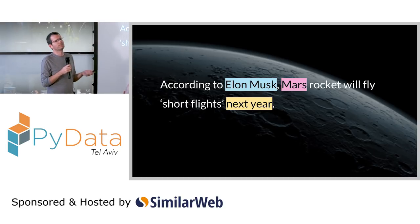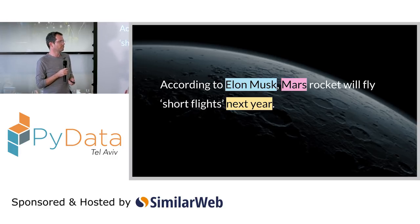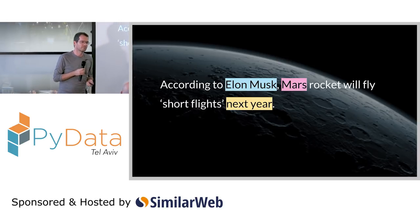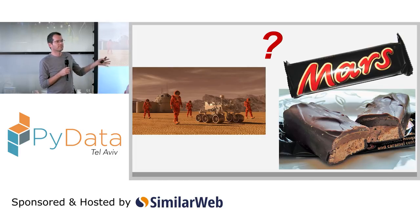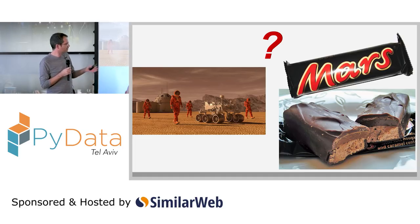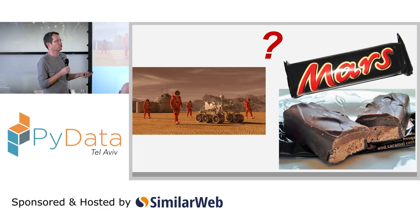Maybe some of you will think it could be a simple task — maybe we could just compile a list of location names from Wikipedia and use a simple lookup procedure to find all instances in the text. But you wouldn't know whether Mars is mentioned as a location or as the candy bar. We really need the context to help us resolve these kinds of ambiguities.